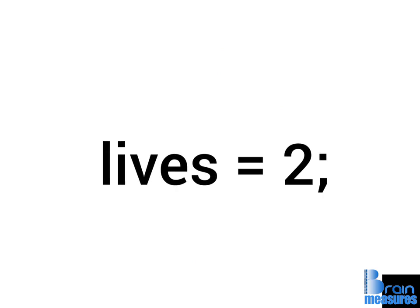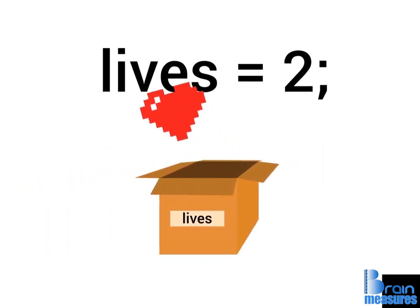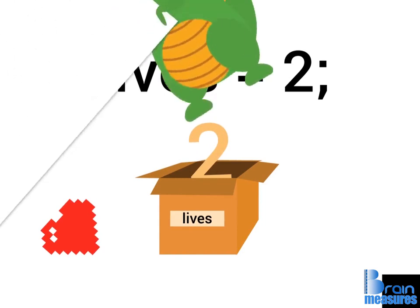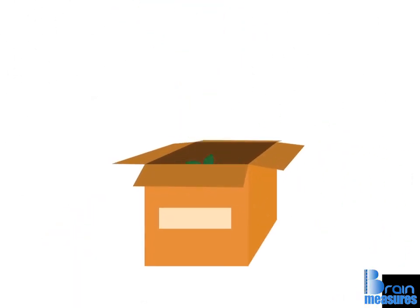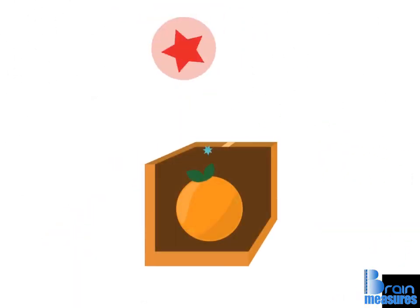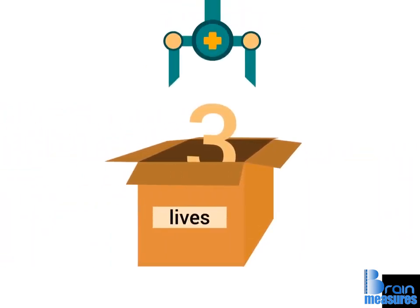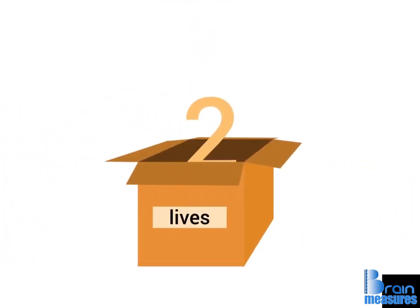This instruction will tell the program to replace the current value in the variable lives with the number 2. It's important to understand that variables can only hold one value. In our example, we'll lose the number 3 once the number 2 takes its place.